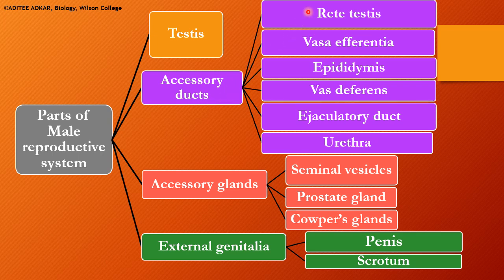What are the accessory ducts? The rete testis, vasa efferentia, epididymis, vas deferens, the ejaculatory duct and the urethra. Then, the accessory glands — those glands which will contribute to the formation of semen. They are the seminal vesicles, prostate gland and the Cowper's glands.